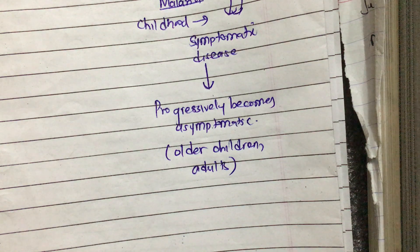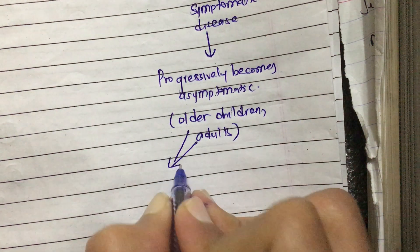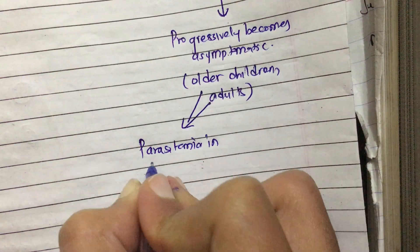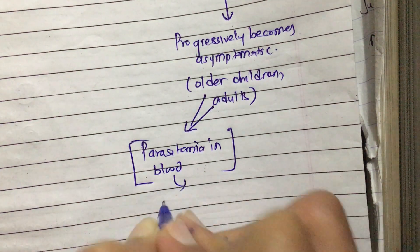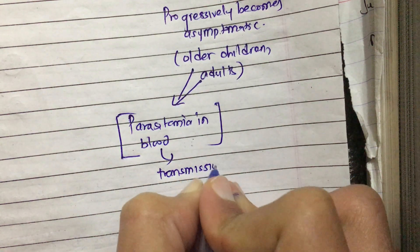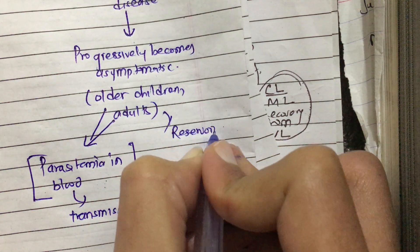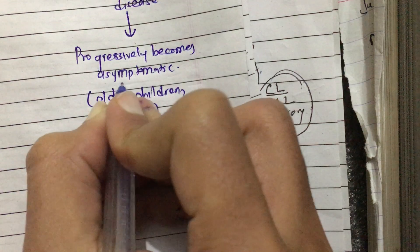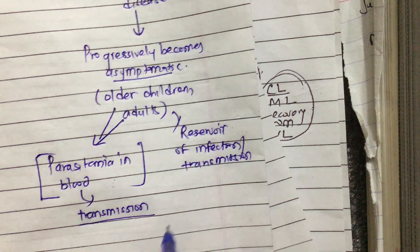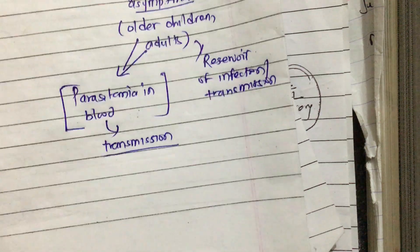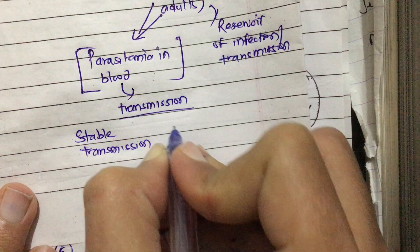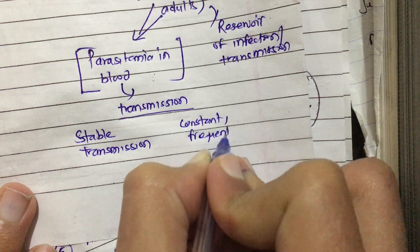Although older children and adults are asymptomatic, they have parasitemia in the blood, and this level of parasitemia is sufficient for transmission. So these older children and adults are the reservoir of infection in these areas — they do not have symptomatic disease but can transmit malaria. In these areas there is stable transmission, meaning constant, frequent, year-round transmission.